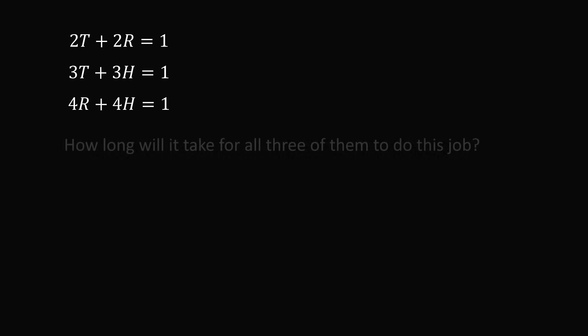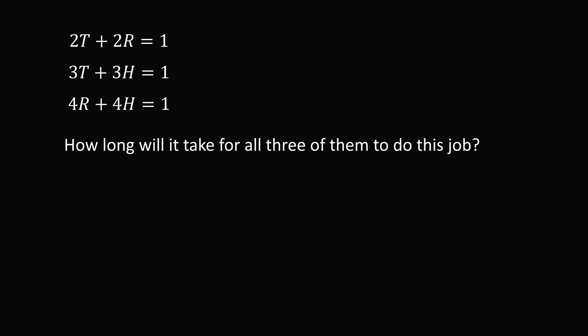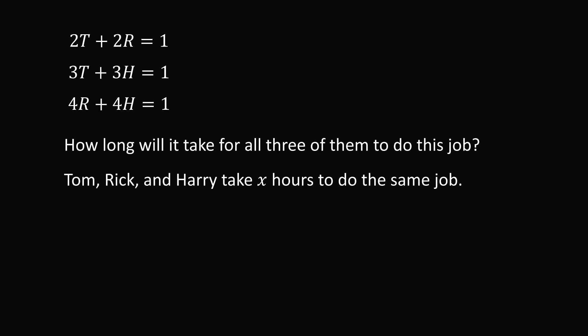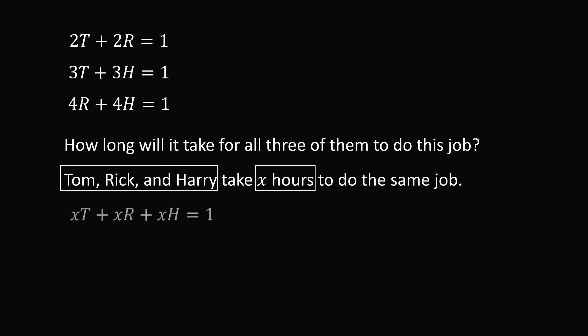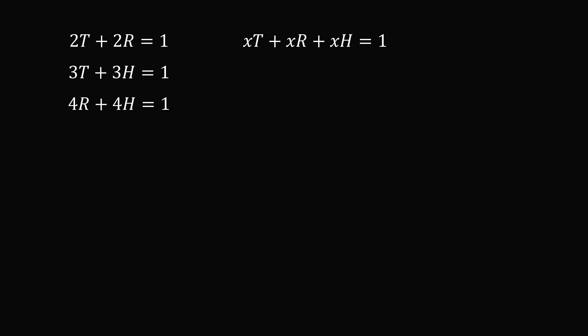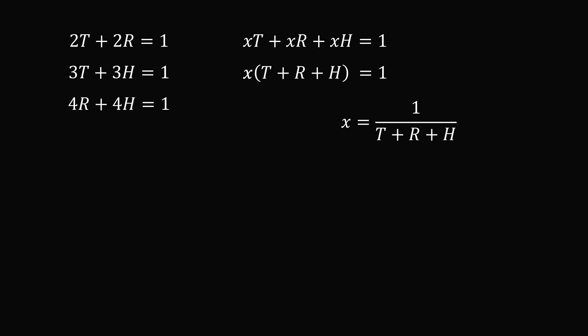The final part of the question: how long will it take all three of them? Let x be the number of hours for Tom, Rick, and Harry working together. The work done is x times t plus x times r plus x times h, all equal to 1. Factoring out x gives x times (t plus r plus h) equals 1, so x equals 1 divided by (t plus r plus h). All that remains is to solve for the sum t plus r plus h from the first three equations.